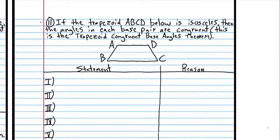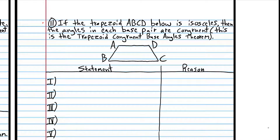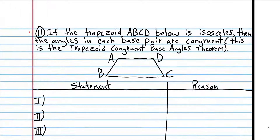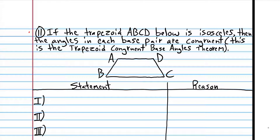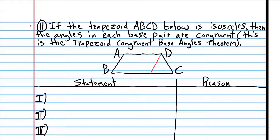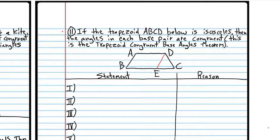On to number eleven: if the trapezoid ABCD below is isosceles, then the angles in each base pair are congruent. We're assuming it's isosceles, meaning this side is congruent to this side. If that's true, we're going to show these two angles must be congruent and also these two angles must be congruent — those are the base pairs. To do this we're going to have to draw an auxiliary line segment, and we're going to call that point E.